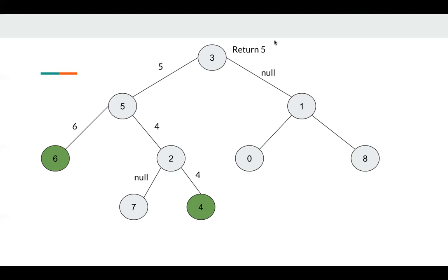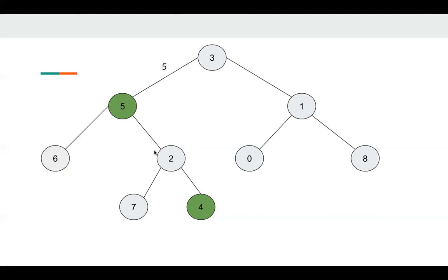As long as we see a node that is p or q (shown as a green node), we just return it. Otherwise, for a node like node 5, if there's something in the left part and something in the right part, we return that node itself. Otherwise, like for node 2, only one of the children returns something, so it just returns what it received. In the example where p is 5 and q is 4, node 5 is p or q so we return 5 immediately without recursing into the left and right children. Node 1 returns null to node 3, so node 3 returns 5.